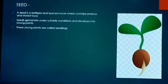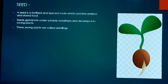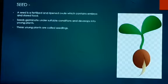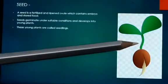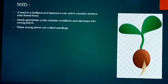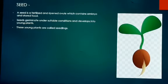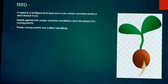When favorable conditions arrive, these seeds undergo germination and give rise to young plants, or baby plants. These young plants or baby plants are called seedlings. In general, a seed is a ripened and fertilized ovule which contains an embryo and stored food for the embryo, and when favorable conditions come, it develops into a young plant called a seedling.